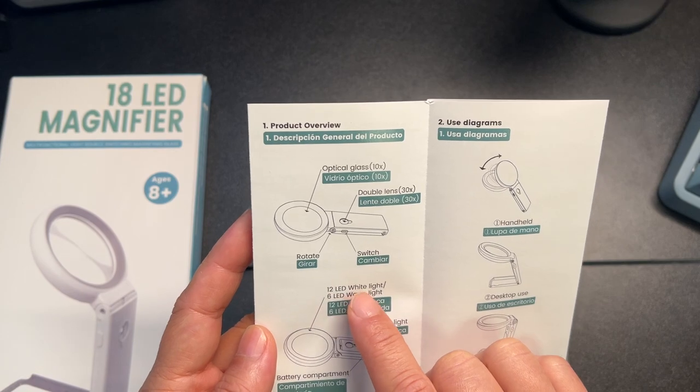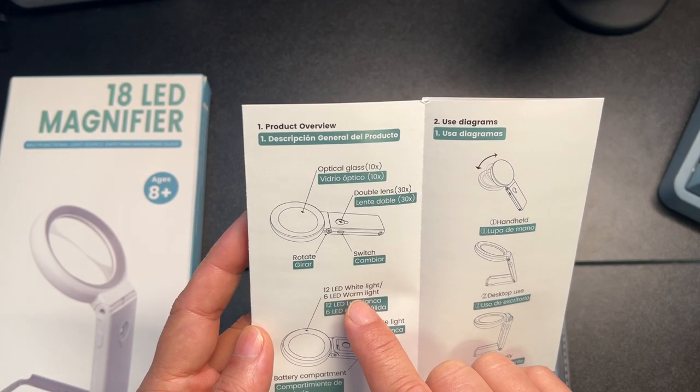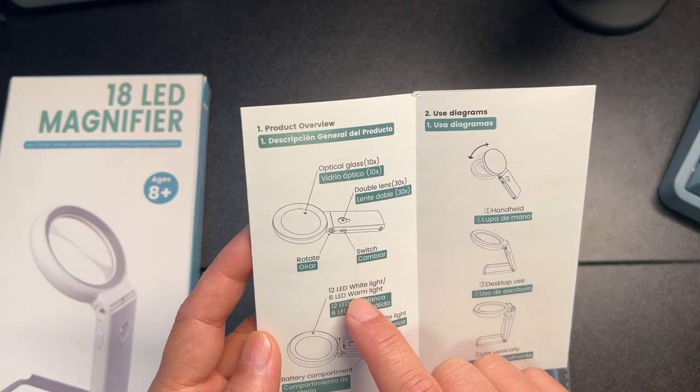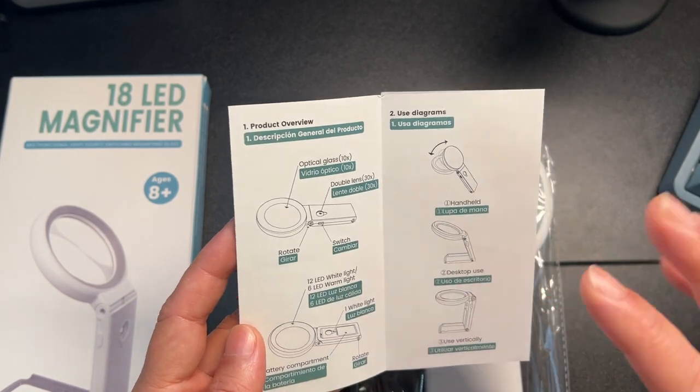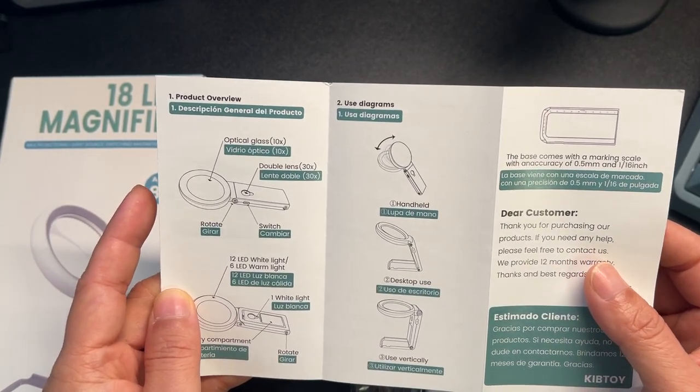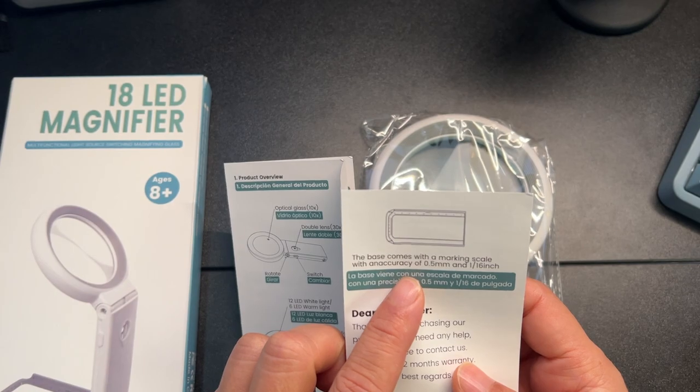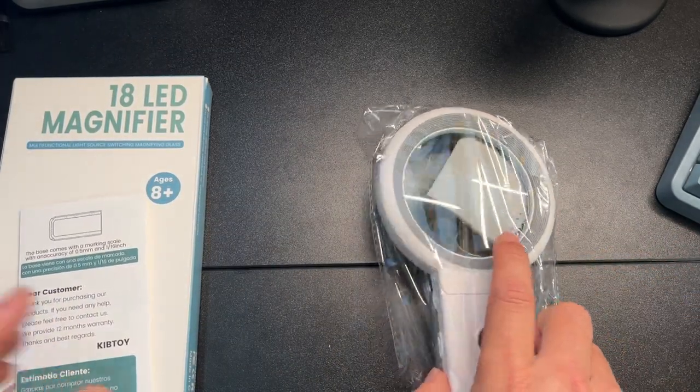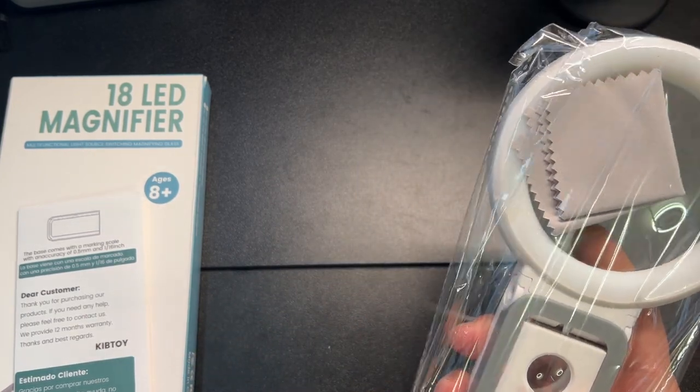It has 12 white LEDs and 6 warm LEDs. If you're reading a book at night, you probably want the 6 warm LEDs so you don't need it super bright. Oh, it looks like they have a little scale here so you can measure stuff. That's a nice add-on. Let's get this out of the package.